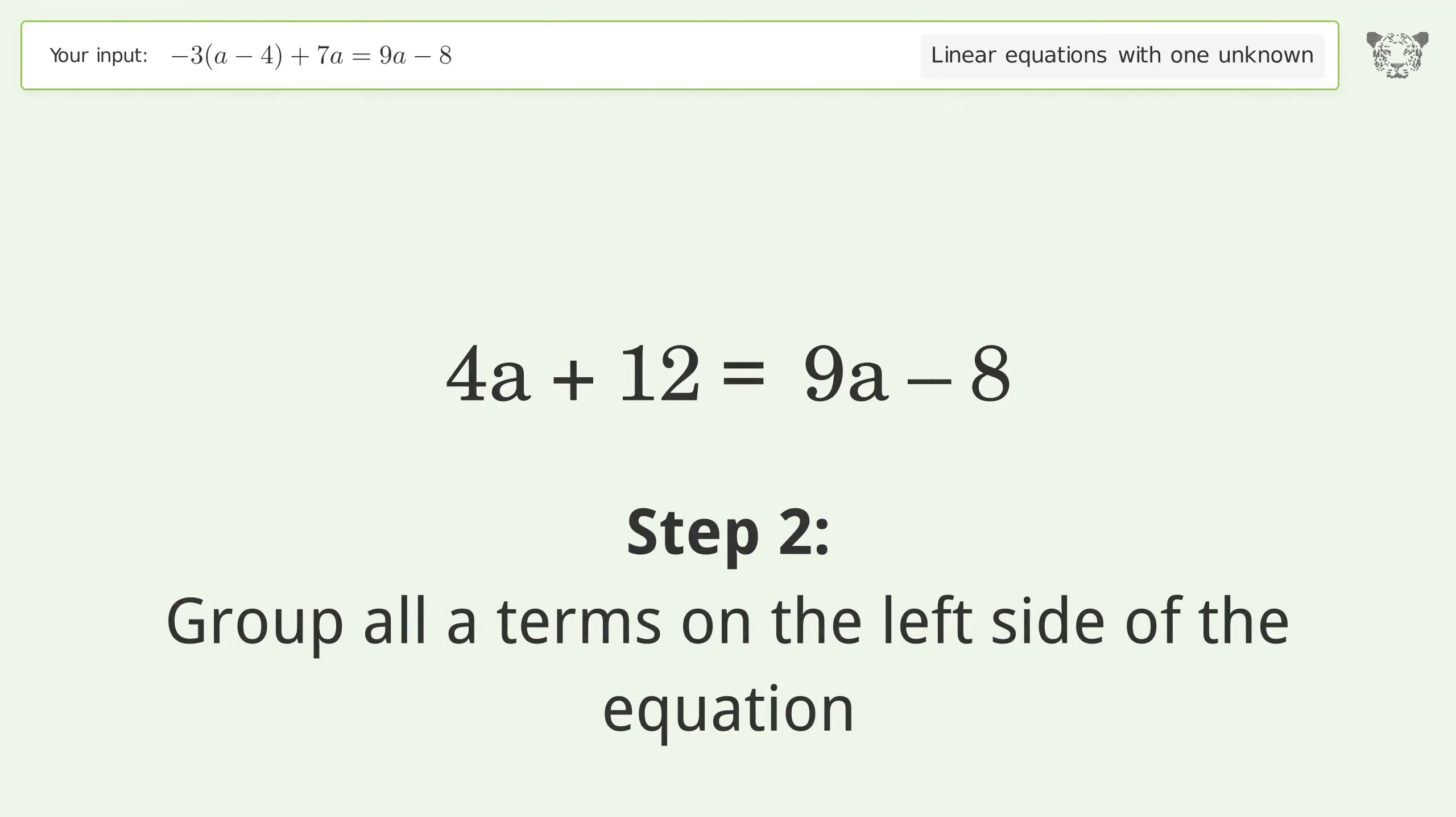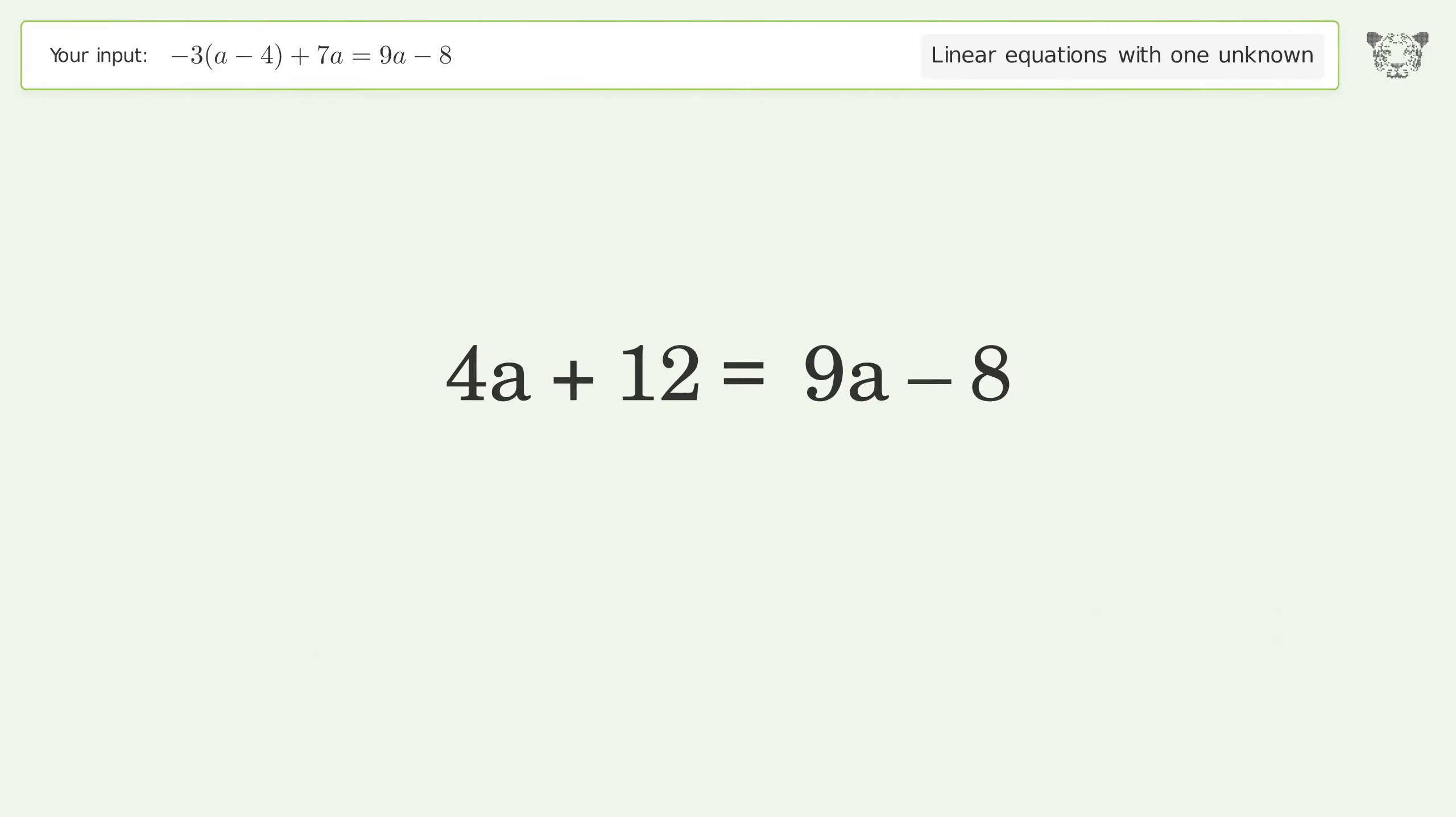Group all a terms on the left side of the equation. Subtract 9a from both sides. Group like terms.